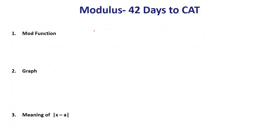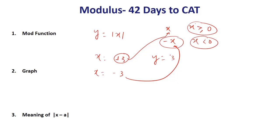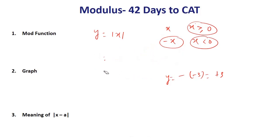First of all, the modulus function: y = |x| is defined as x when x ≥ 0, and −x when x < 0. So if x = +3, then y = 3 because x is greater than or equal to 0. When x = −3, this part of the function is effective, so y = −(−3) = +3. Effectively, the output of the modulus function is always positive, and it is 0 only when the input is 0.